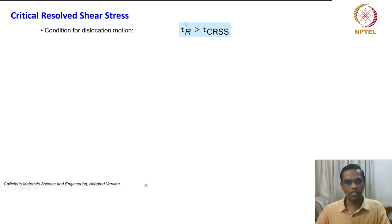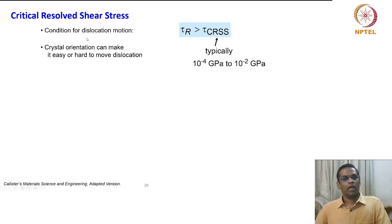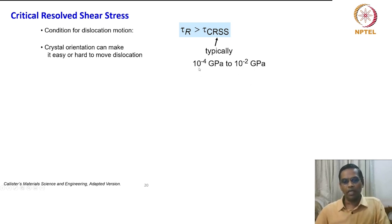tau_r should be greater than the critical resolved shear stress required to move the dislocation. The critical resolved shear stress values are typically in the range of 10^-4 GPa to 10^-2 GPa.